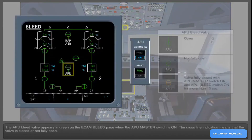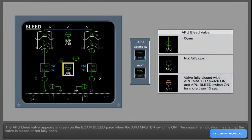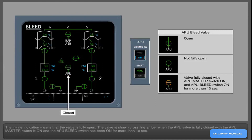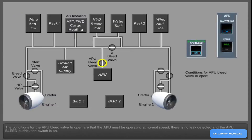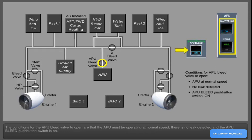The APU bleed valve appears in green on the ECAM bleed page when the APU master switch is on. The cross-line indication means the valve is closed or not fully open; the in-line indication means the valve is fully open. The valve is shown cross-line amber when the APU valve is fully closed, with the APU master switch on, and the APU bleed switch has been on for more than 10 seconds. The conditions for the APU bleed valve to open are that the APU must be operating at normal speed, there is no leak detected, and the APU bleed push-button switch is on.